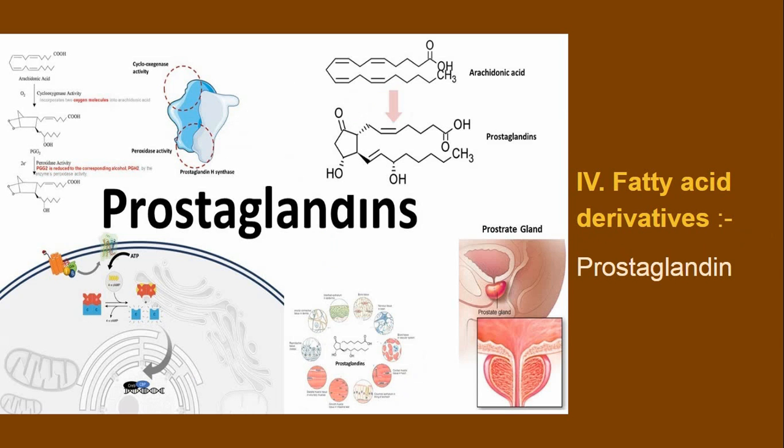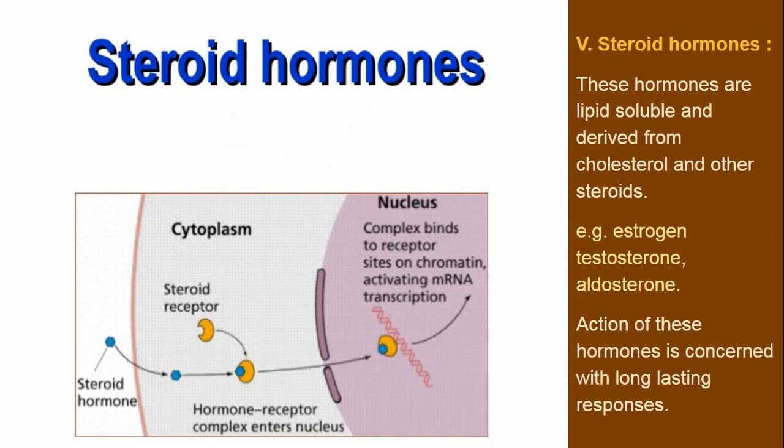The fourth type is fatty acid derivatives. There are some hormones which are fatty acid derivatives. An example is prostaglandin, which is secreted from the prostate gland and is a fatty acid derivative hormone.